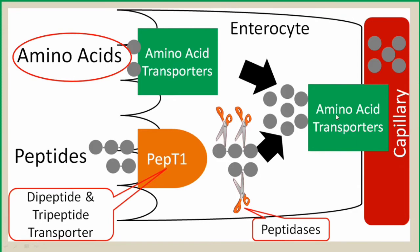From inside the cell, amino acid transporters move them into the blood capillaries. In the case of protein digestion, some peptides — dipeptides or tripeptides — will enter the cell through a special transporter known as the dipeptide and tripeptide transporter.